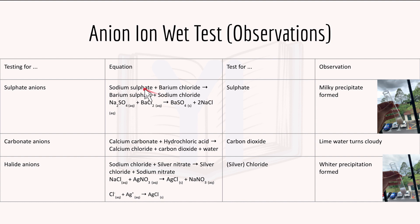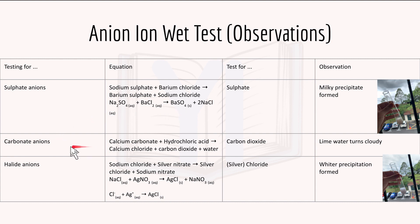Here are the observations for the anion wet tests. For sulfate ions, a white precipitate of barium sulfate forms because it is insoluble and solid. For carbonate ions, lime water turns cloudy due to the formation of carbon dioxide gas. For halide anions, a white precipitate forms due to the formation of silver chloride.